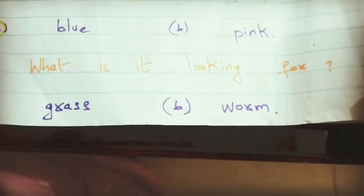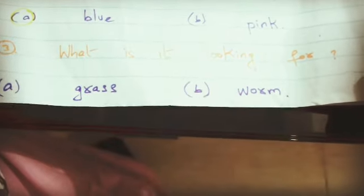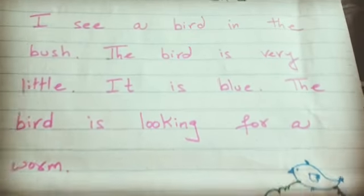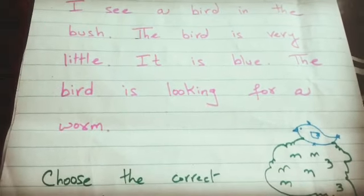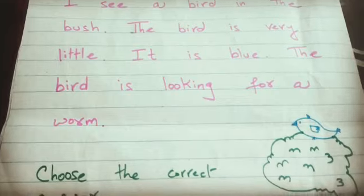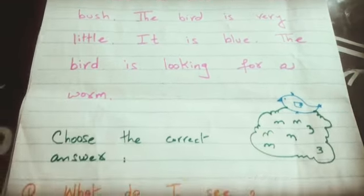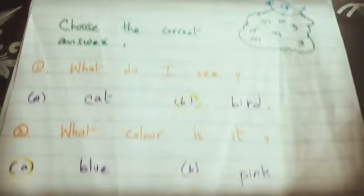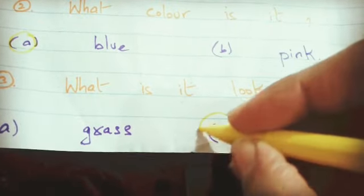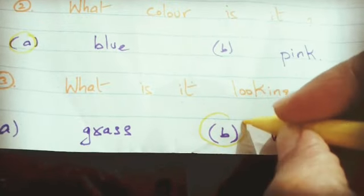Now question number 3: What is it looking for? A: Grass. B: Worm. We will again go to the paragraph and read the last line — The bird is looking for a worm. So, the correct option is option B: Worm.